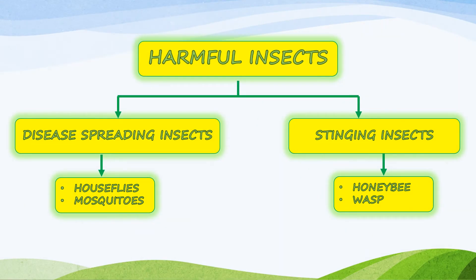Many insects are harmful to us. Harmful insects are classified into two categories: disease spreading insects and stinging insects. Disease spreading insects include house flies and mosquitoes. Stinging insects include honey bees and wasps.